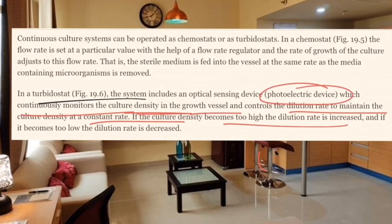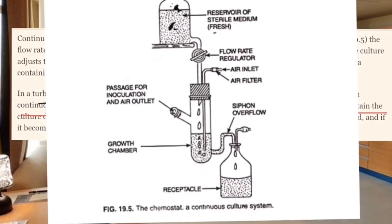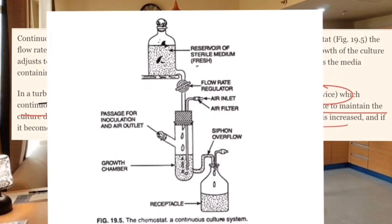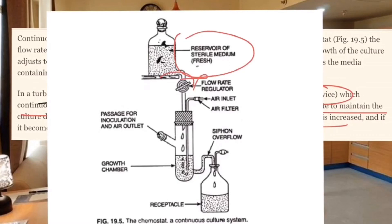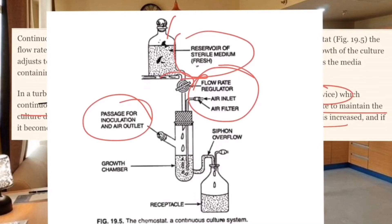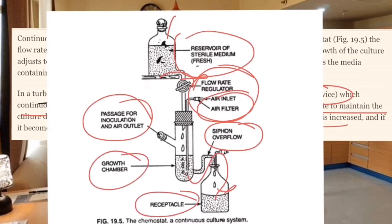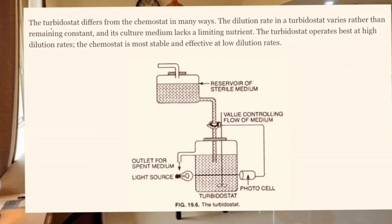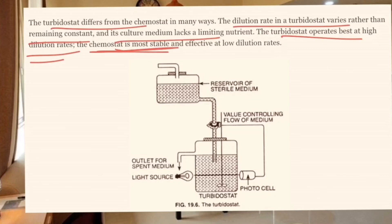These are the two methods by which you can maintain continuous culture: the Chemostat method and the Turbidostat method. A graph shows the supply and container setup. The turbidostat differs from the chemostat in its dilution rate — the turbidostat operates at a high dilution rate, while the chemostat is more stable and operates at a low dilution rate. This is one key difference between them.